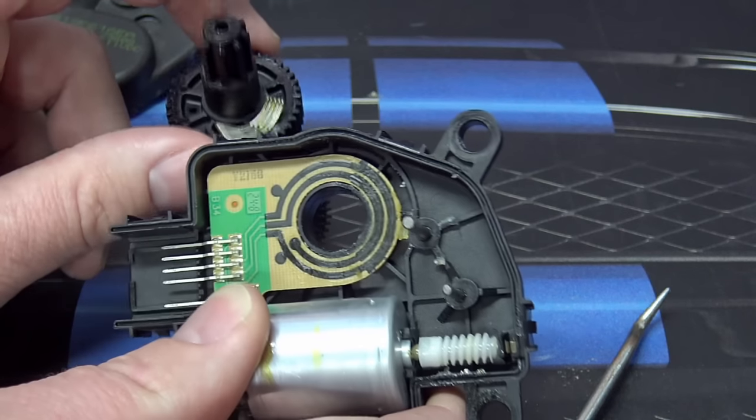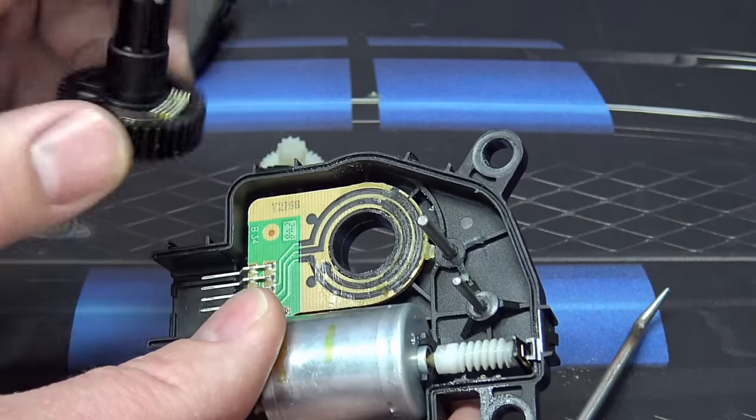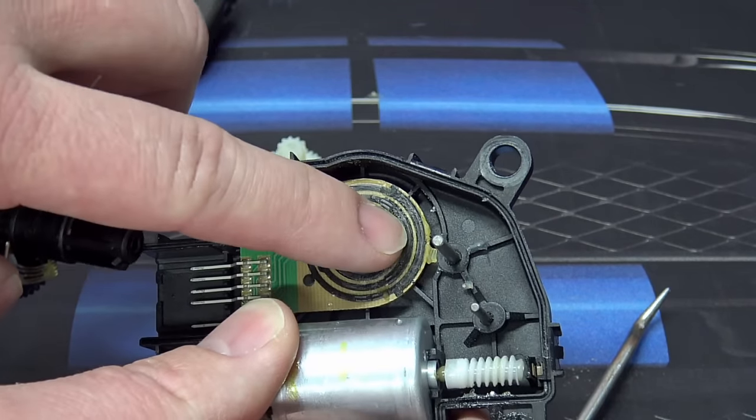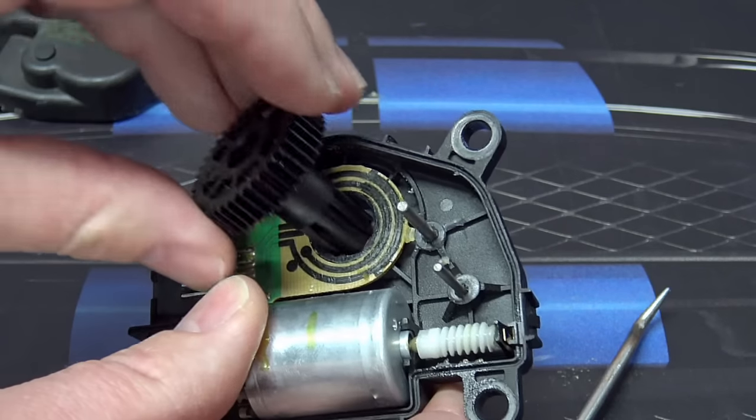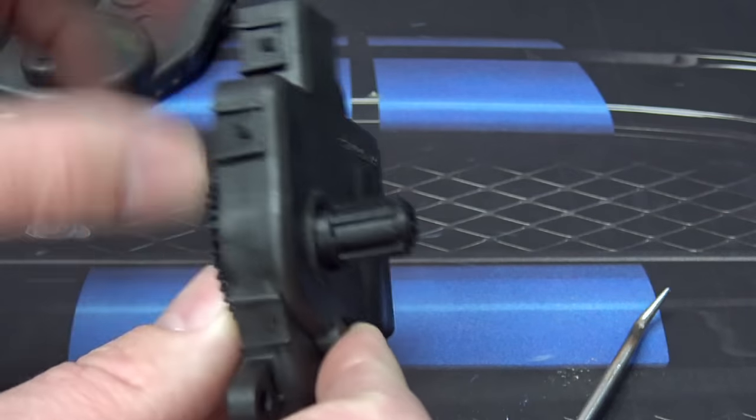So what happens is these contact pins lose contact with the track on here, and that loses position. So everything else works fine except it's losing position on there.